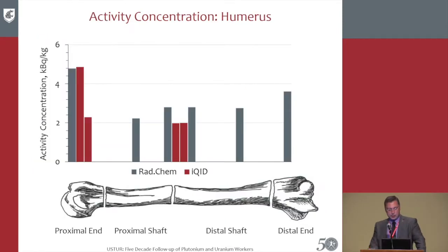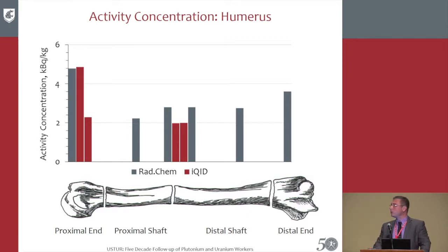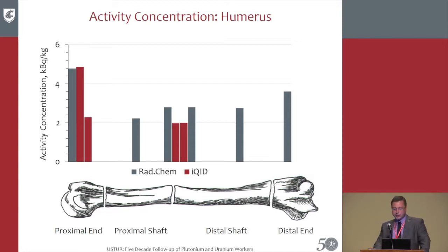These are the results for activity concentration in the humerus. In dark red are the activity concentrations acquired using iKID, and in gray are the radiochemical analysis results. You can see they follow pretty much the same pattern and are in pretty good agreement with each other.